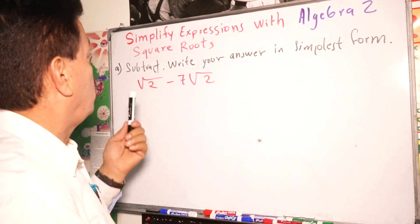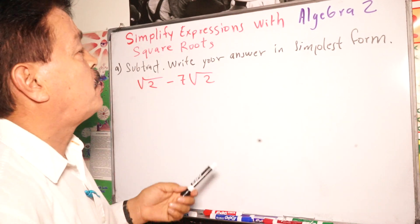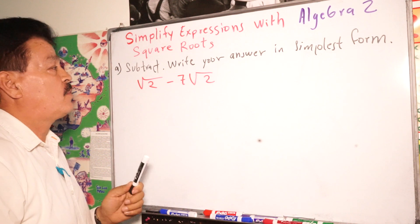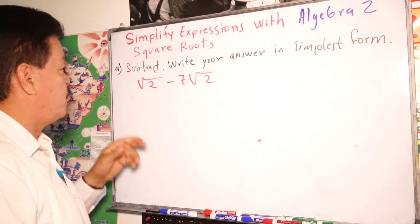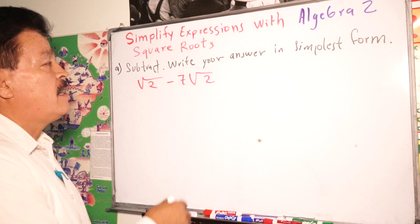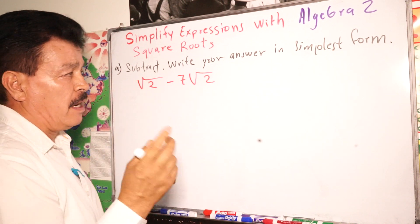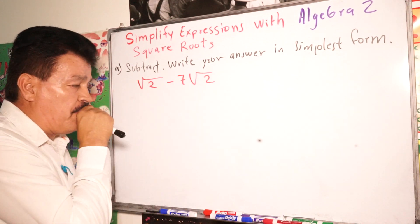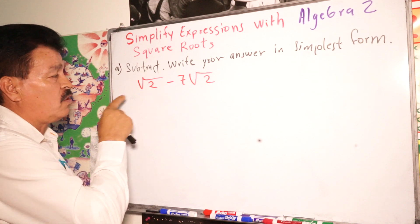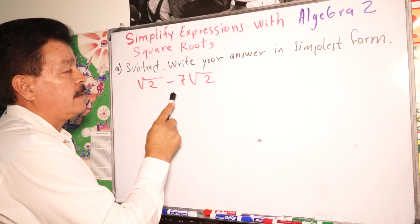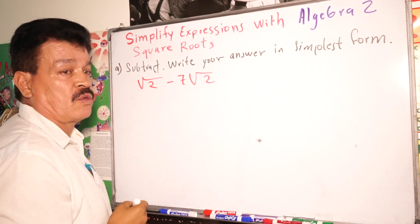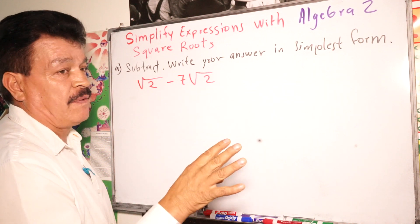Algebra 2, the topic is simplified expression with the square root for today. We have our first problem here. We have to subtract and then write our answer in simplest form. The problem is the square root of 2 minus 7 times square root 2. We have to simplify.